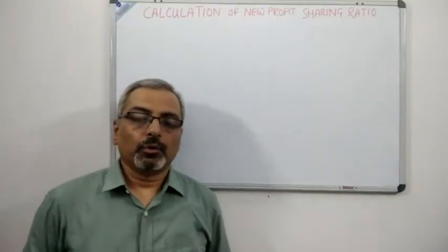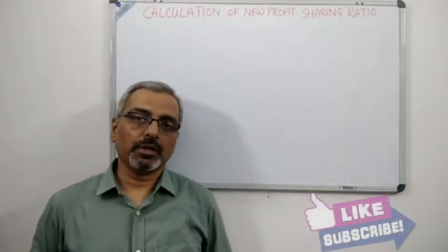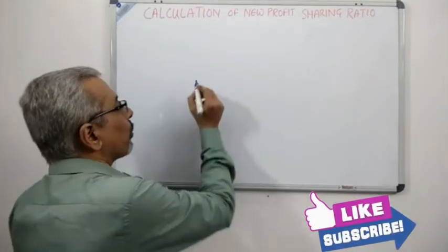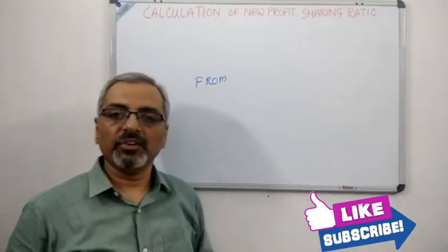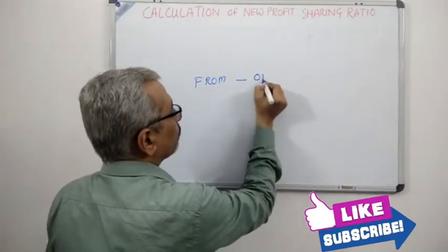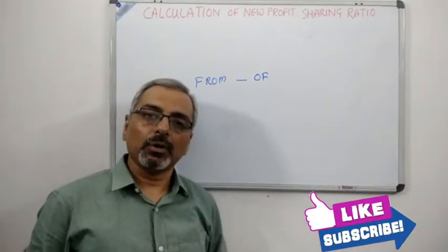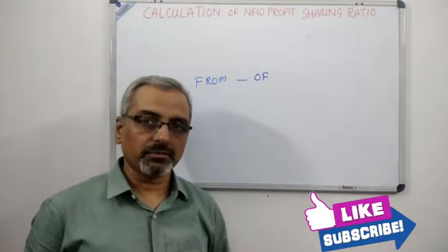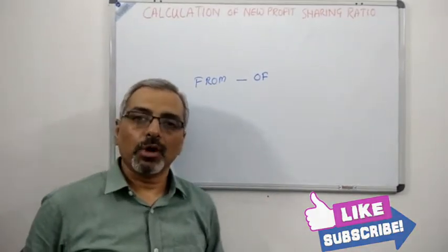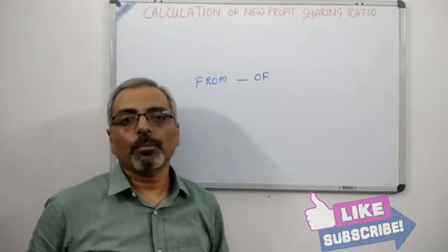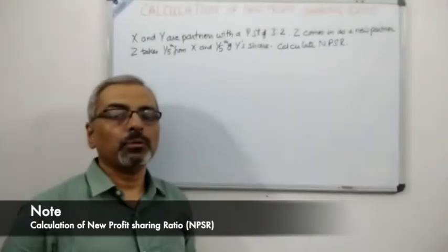In my first video of the admission chapter we talked about the calculation of the new profit sharing ratio using the concept of 'from', and in my second video I talked about the concept of 'of'. In this video, which is the last of this part, we will talk about a combination of 'from' and 'of', and see how we calculate the new profit sharing ratio.